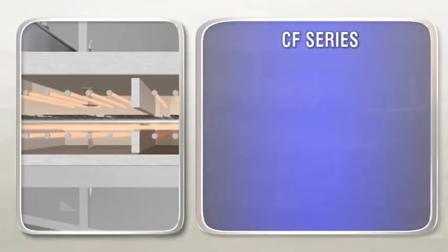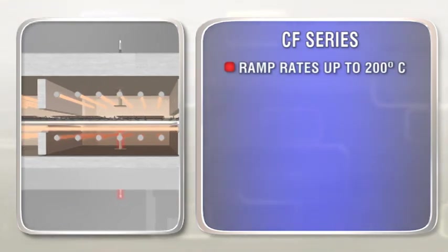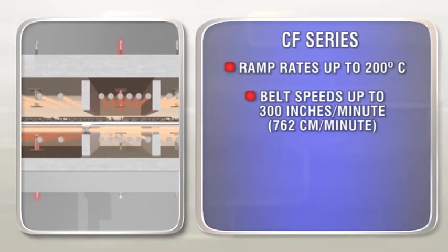Despatch's CF Series single and dual lane firing furnaces feature ramp rates of up to 200 degrees Celsius and belt speeds up to 300 inches per minute.